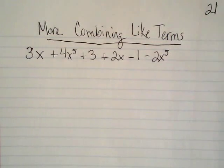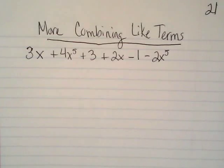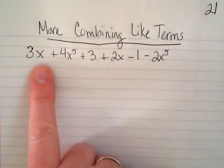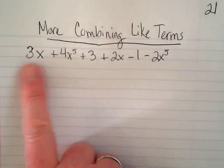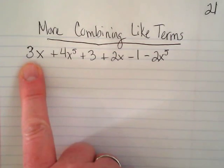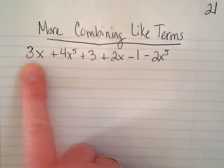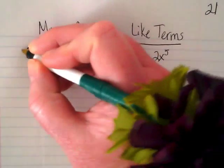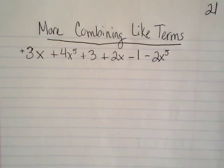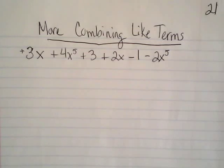We're starting with combining like terms, going a little more in depth than before. Remember when we talked about combining like terms — the terms are held together like a magnet. They have their coefficient (the number in front), the variable, and whatever sign is also in front. What's invisible on this 3x? It's positive, so we don't put it there, but there is an invisible plus sign. That's important because if we start moving terms around to put like terms together, that plus sign might show up.